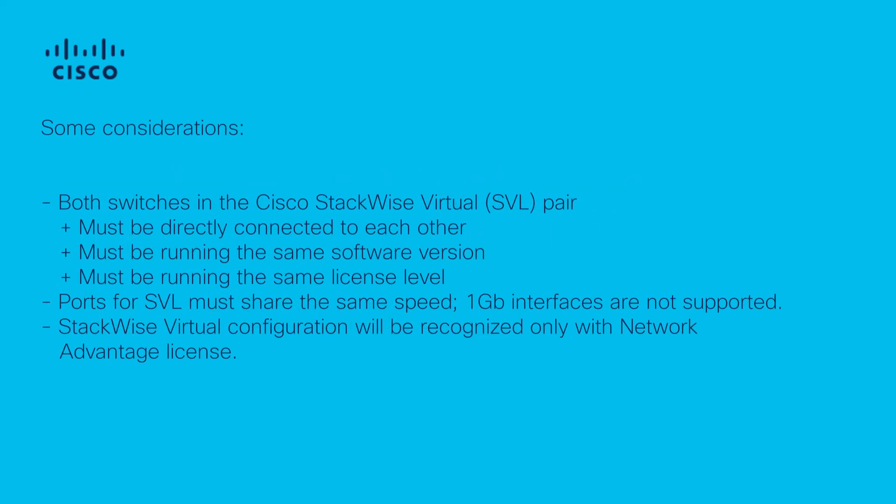First of all, let's remember some considerations. Both switches in a Cisco stackwise virtual pair must be directly connected to each other, running the same iOS version and same license level. The ports for SVL must share the same speed. One gig interfaces are not supported. The stackwise virtual configuration will be recognized only with network advantage license.